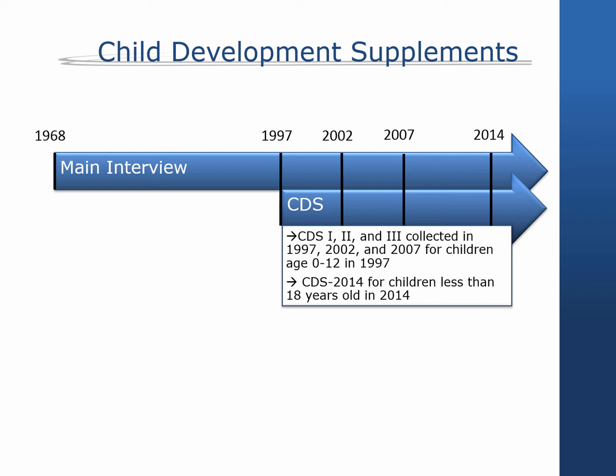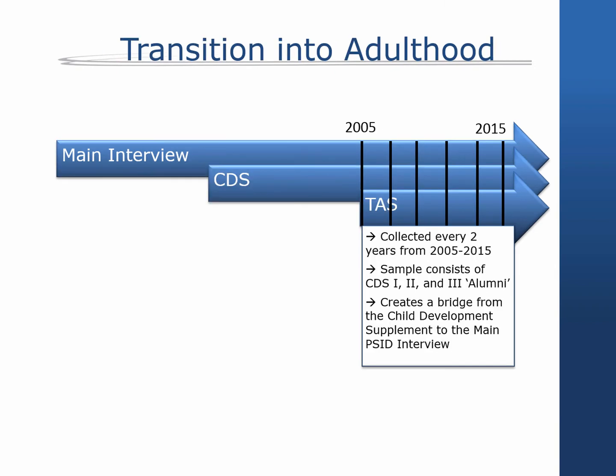A new round of CDS was undertaken in 2014 with PSID children under age 18 and will be continued in 2019. When children in the original CDS cohort reached age 18 and left high school, information was obtained about their circumstances through telephone interviews conducted shortly after the main PSID interview. Begun in 2005 and collected biennially, the Transition to Adulthood supplement collects information on psychological functioning, marriage, family responsibilities, employment and income, education and career goals, health, social environment, and religiosity.